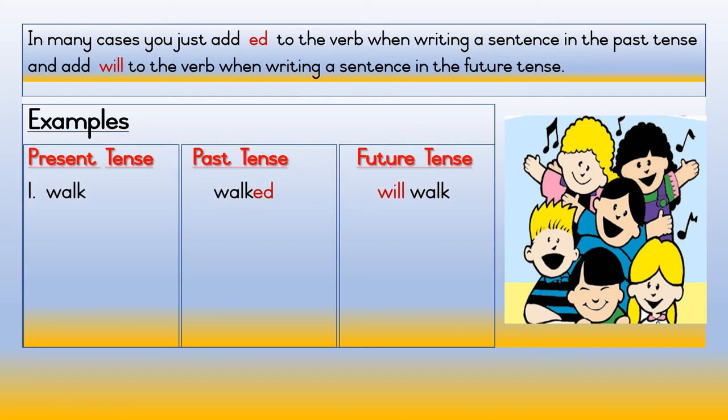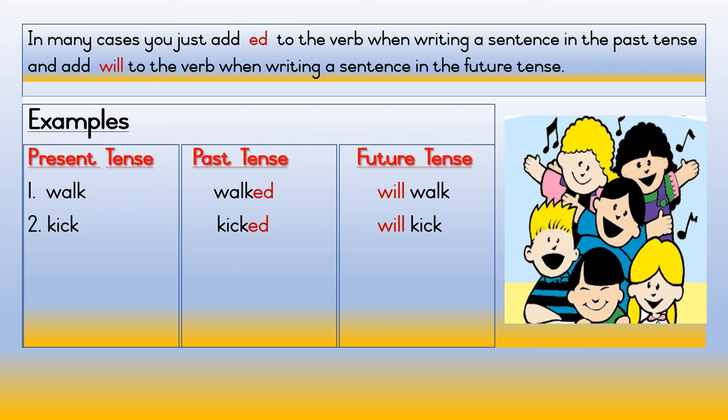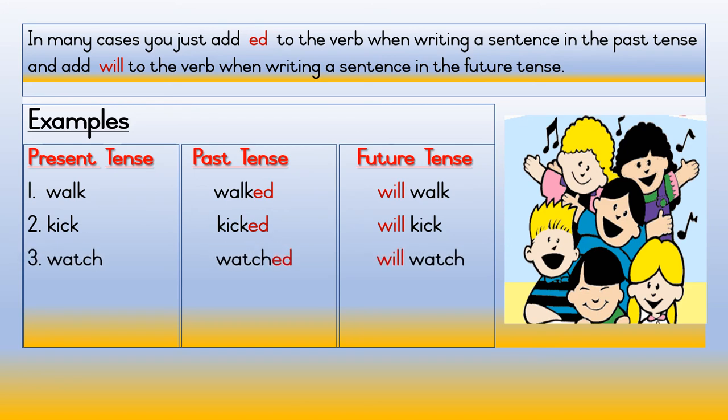Number one — present tense: walk; past tense: walked; future tense: will walk. Number two — present tense: kick; past tense: kicked; future tense: will kick. Number three — present tense: watch; past tense: watched; future tense: will watch.